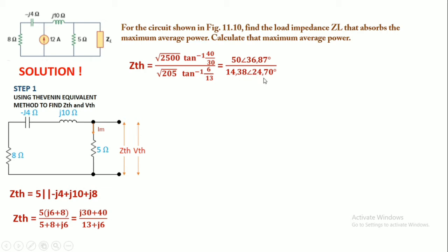So the final value of the Thevenin impedance is 3.49 at 12.17 degrees phase angle, and it is the same value as 3.415 + j0.7357 in complex form.